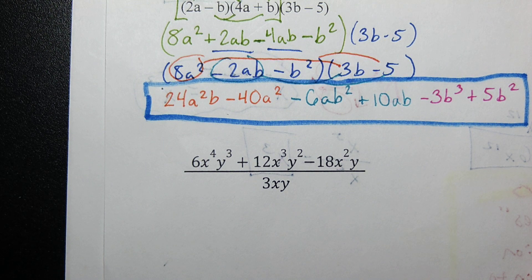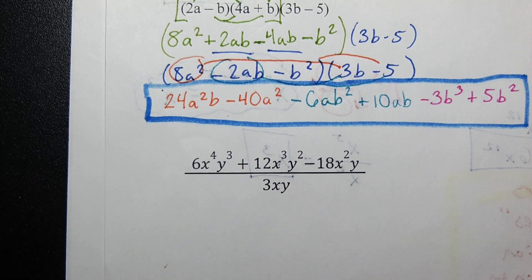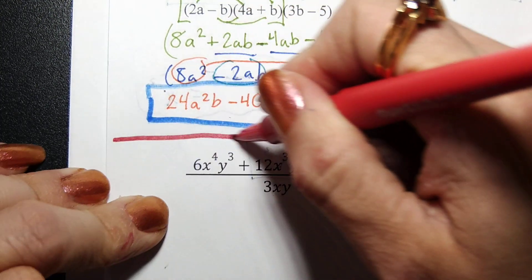Alright folks, so these problems - it's division distribution which we've seen before. It's just a bit more complicated because what we're essentially going to be doing is turning this big monster problem into three mini problems of what we did yesterday.